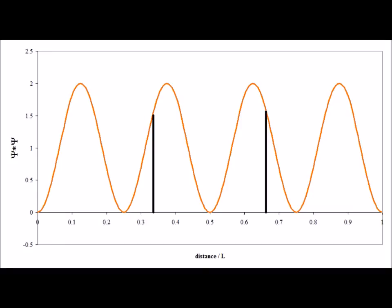Here is displayed the probability density for the n equals 4 state. The two vertical black lines delineate where L over 3 and 2L over 3 are, so we can see the middle third of the box.